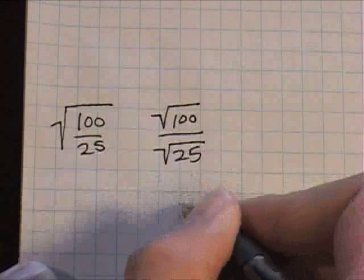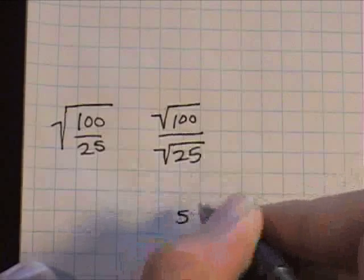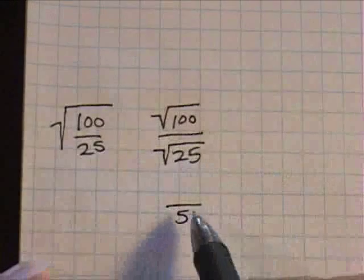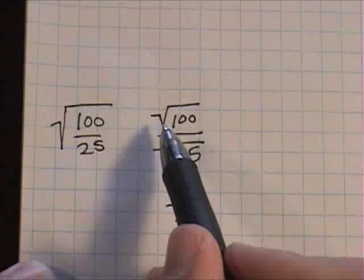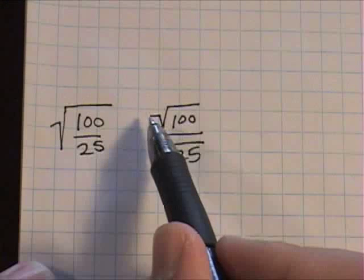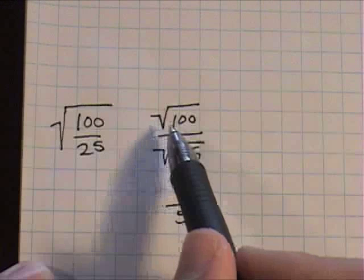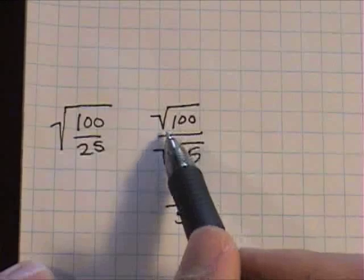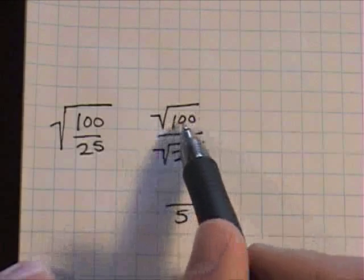We know it's five from an earlier problem. So that's the bottom, and then the top, what equal factor multiplied twice, or at least appears twice as a factor, equals a hundred.